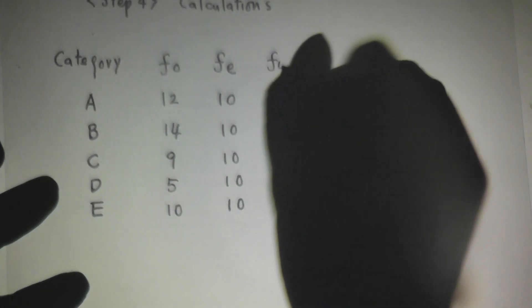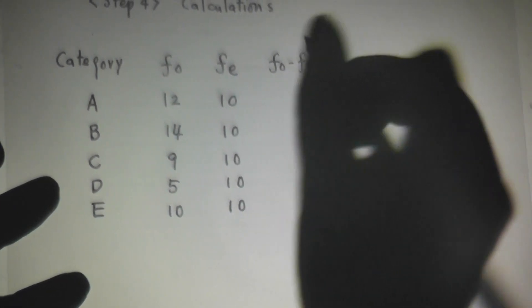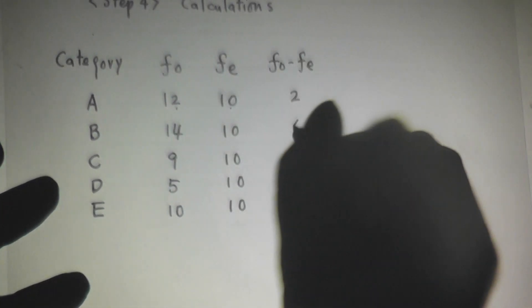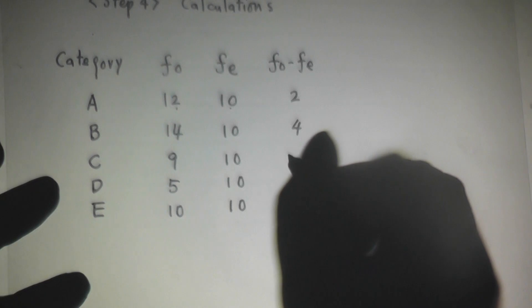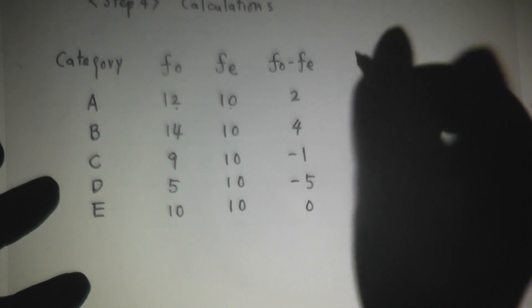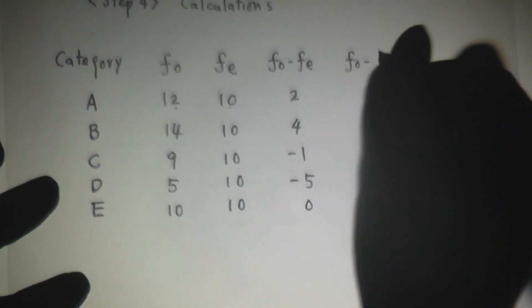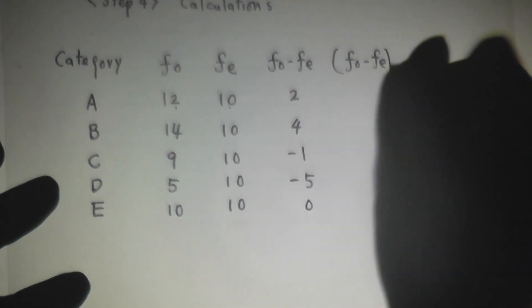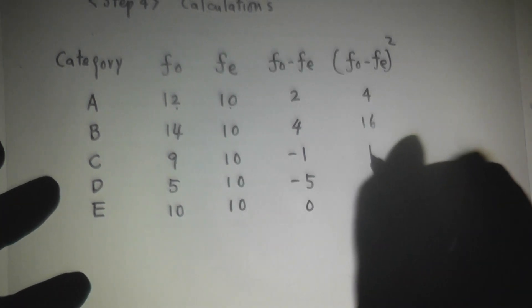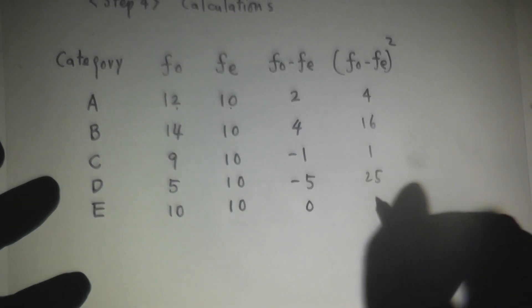And FO minus FE, the difference of these two columns. The first one is 2. Second one is 4. This is minus 1. This is minus 5. And this is 0. Now, FO minus FE squared. This is 4, 16, 1, 25, and 0.